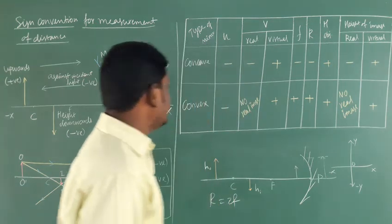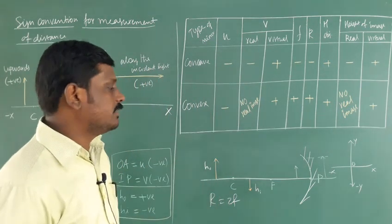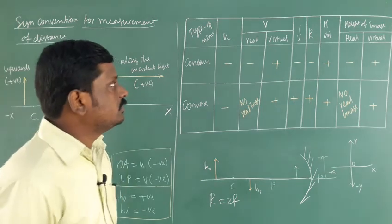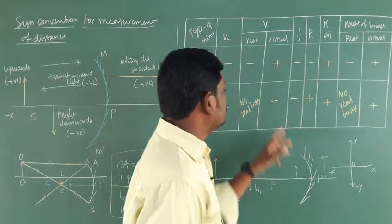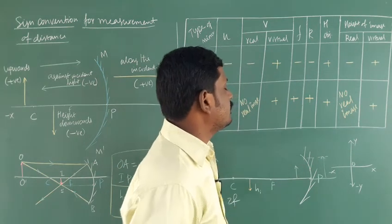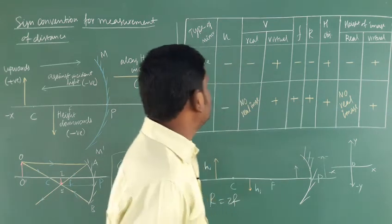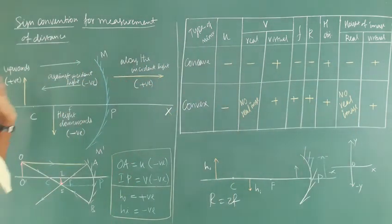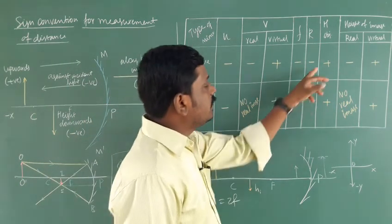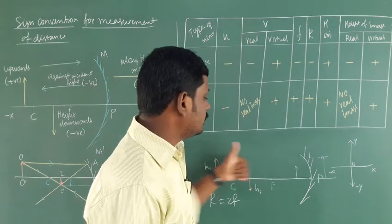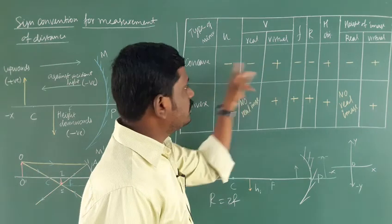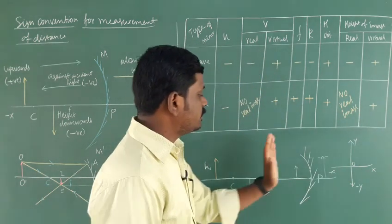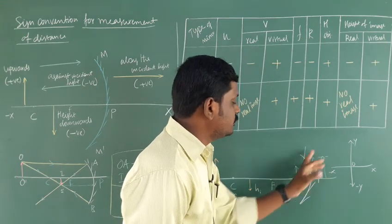For a convex mirror: u is always negative because the object is placed on the left-hand side. No real image is formed — only a virtual image. Virtual image is behind the mirror, so v is positive. The focal length is positive, and the radius of curvature is also positive. The height of the object is always positive. The virtual image is behind the mirror, along the direction of light, so it is positive.